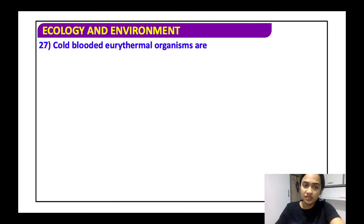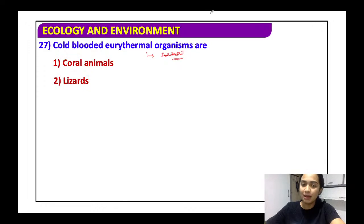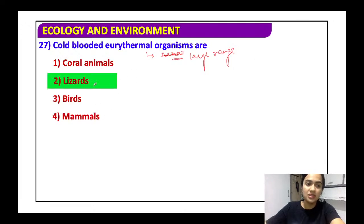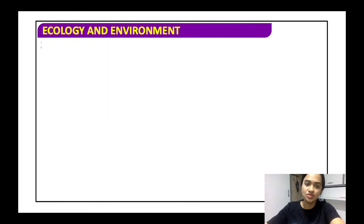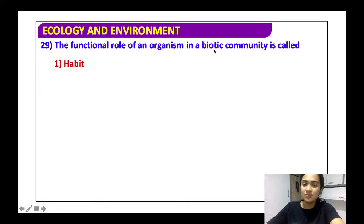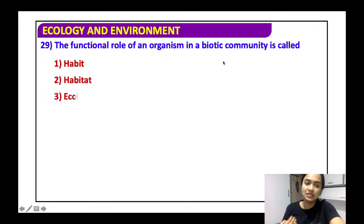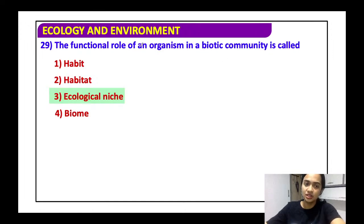Eurythermal organisms can adapt to a large range of temperatures. Cold-blooded eurythermal examples include lizards. The largest ecosystem is the biosphere. The functional role of an organism in a biotic community is called its ecological niche — it is also linked to the concept of profession.